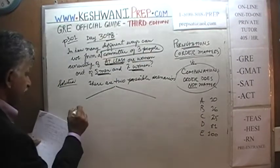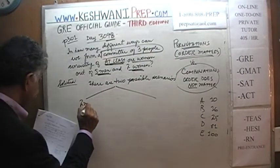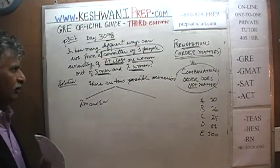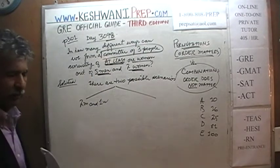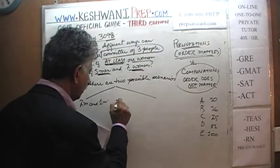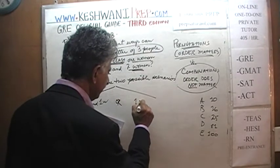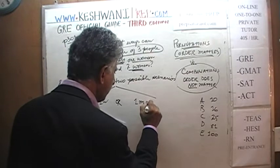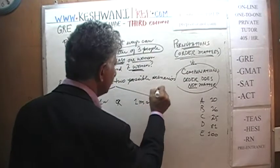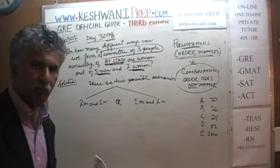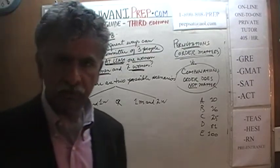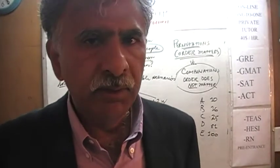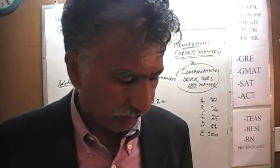At least one woman means two possible scenarios: we can have a committee with two men and one woman — we have fulfilled the condition — or we can have one man and two women, choose both of them. There are two women, and choosing both of them will satisfy the condition that the committee has at least one woman.